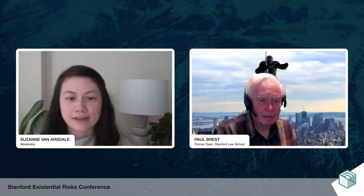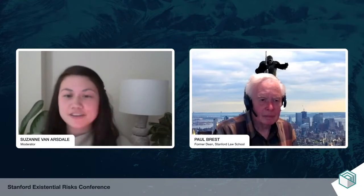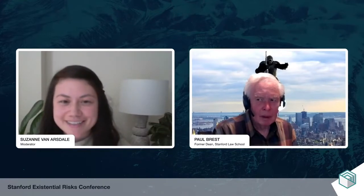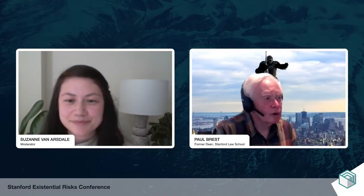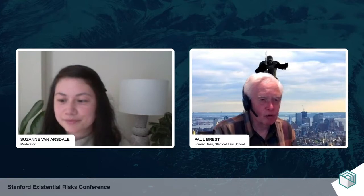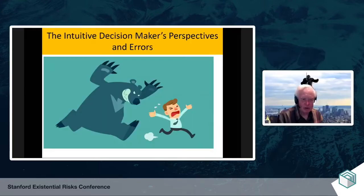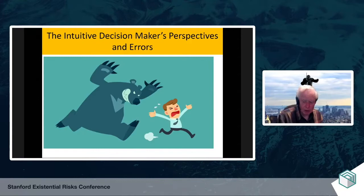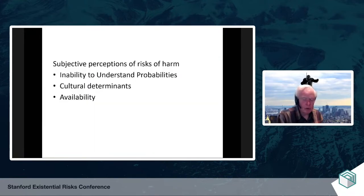Let's move on. If there's more discussion after this, we can do it in whatever room follows this event. So let me share my slides again. We've been talking about how you can think rationally about risk, and I now want to turn to how people actually think about risk, which often deviates from rationality — three points.